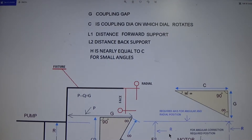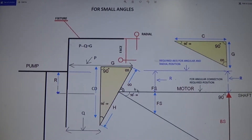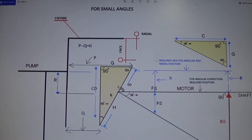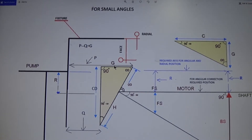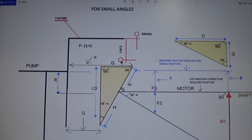In the figure below, G goes from here to here — this is your angular reading, and it is equal to P. P is from here to here, and Q is from here to here. P minus Q is G, the gap difference, which is the same as the angular alignment reading. You may have this with the dial indicator fixed on the face, and this is your rim reading.